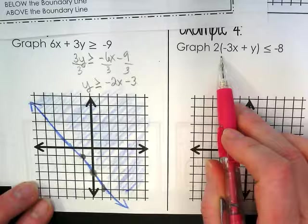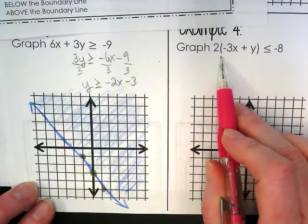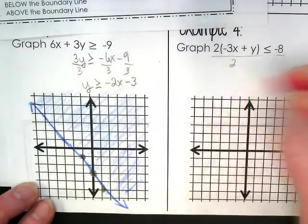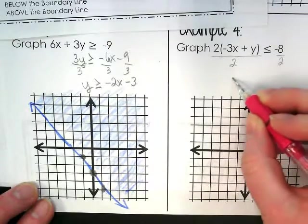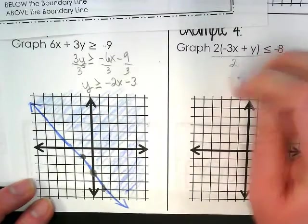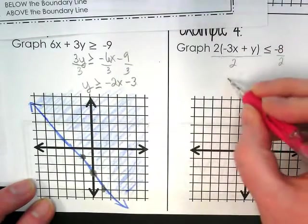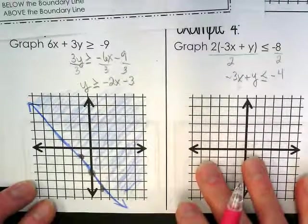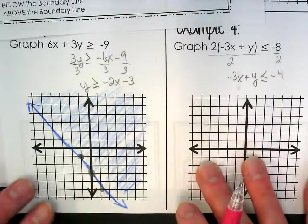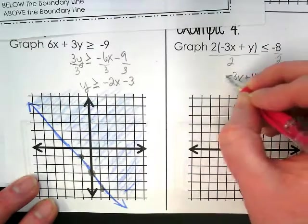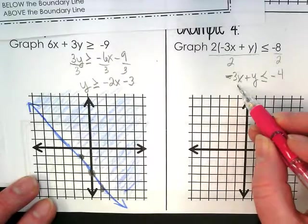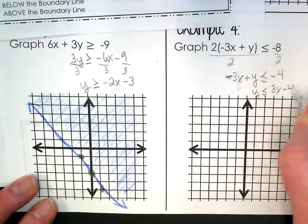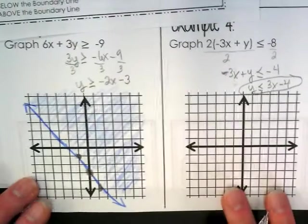This time we have a little distribution to do or we could divide by 2 first. What do you guys want to do? I want to divide by 2. Yeah. It'd be easier. Now I'm going to have a negative 3x plus y is less than or equal to negative 4. I kind of wish one of these examples had us dividing by a negative, but we aren't. I'm going to move the 3x. Right now it's negative, so it's going to become positive. So our y is going to be less than or equal to 3x minus 4. That's going to give us our line to make the boundary.